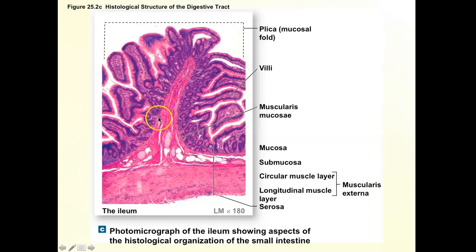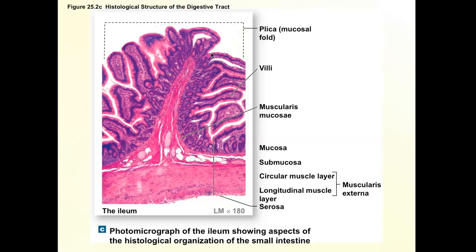You can see a lot of dark purple — that's basically the nuclei of our epithelium. Right where my cursor is, you can see that the dark purple ends at a very clear level — that's the end of our epithelium and lamina propria. The lamina propria connective tissue is very thin and this picture is too zoomed out to really examine it. Then we reach the submucosa.